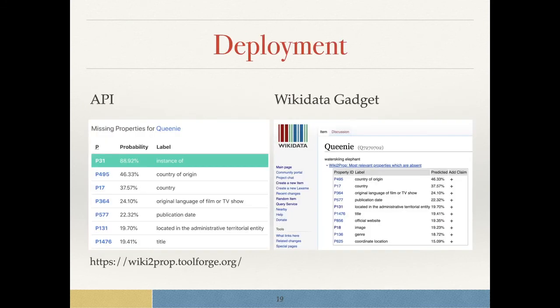Finally, we deployed this tool. First, we have an API endpoint which can query, which is installed on the ToolForge. This is a Wikimedia platform, so it's independent from us. On the Wiki2PropToolForge, you see, first of all, all predictions.